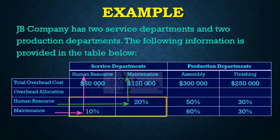In terms of which one we're going to start the allocation with, we would have to go with Human Resource. Why? The Human Resource department is providing the higher percentage when comparing to Maintenance — 20% versus 10%. So therefore, our allocation is going to start with the Human Resource department.